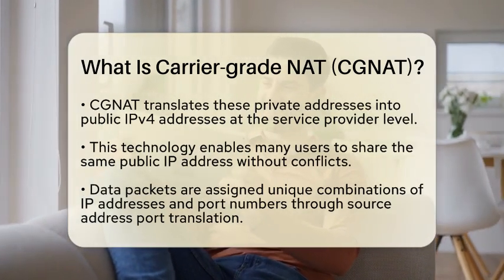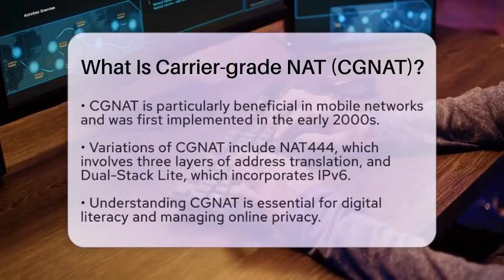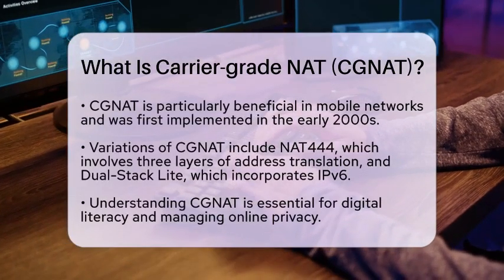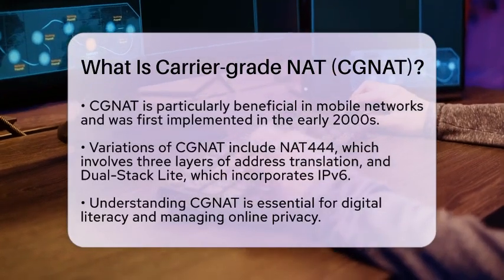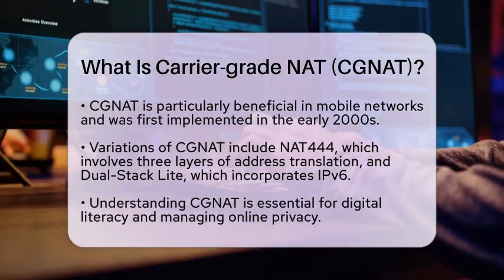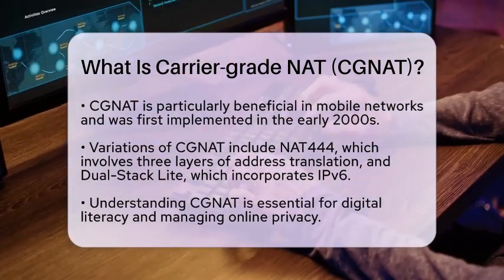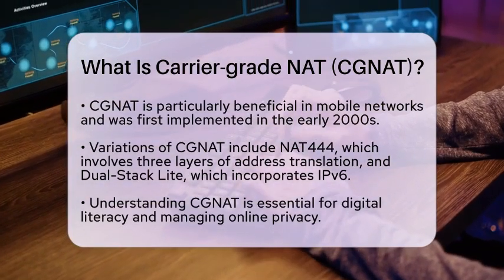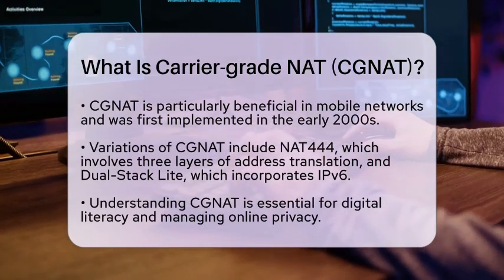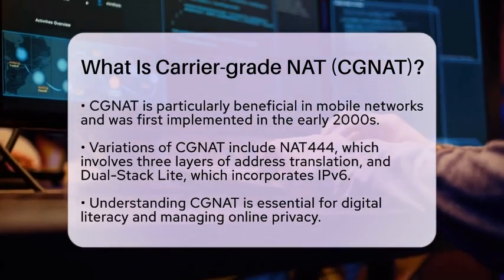CGNAT is especially useful in mobile networks. It was first implemented in the early 2000s to support a large number of users. There are also variations like NAT444 and dual-stack lite. NAT444 involves three layers of address translation, while dual-stack lite uses IPv6 in the carrier's network, which reduces the need for multiple layers of translation.